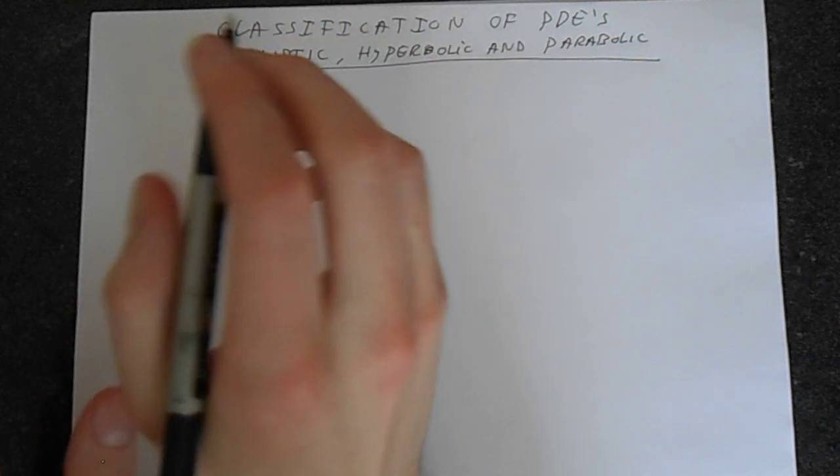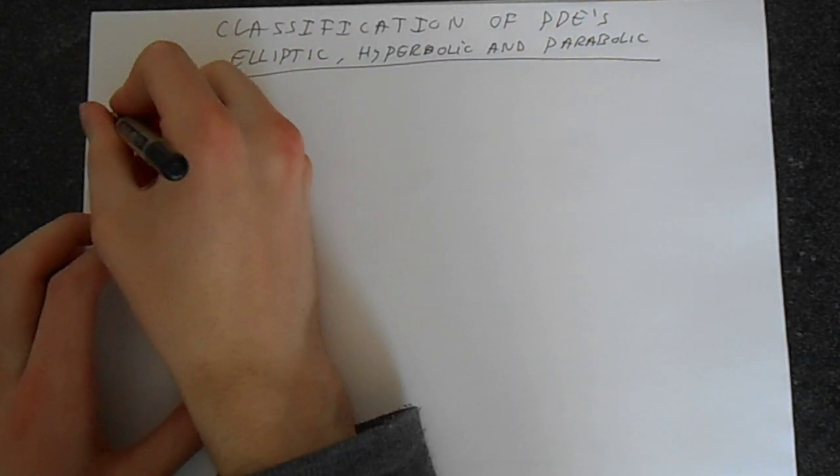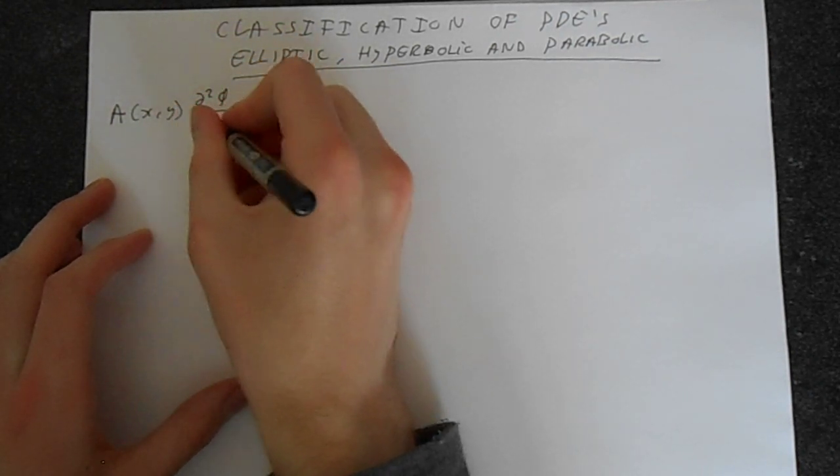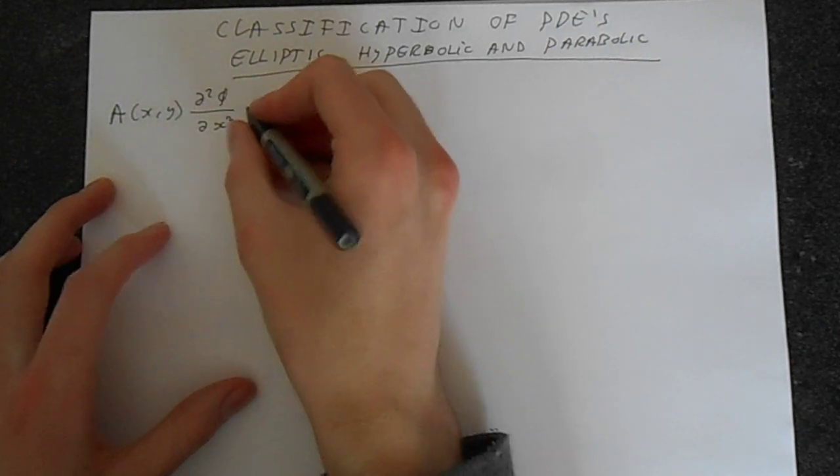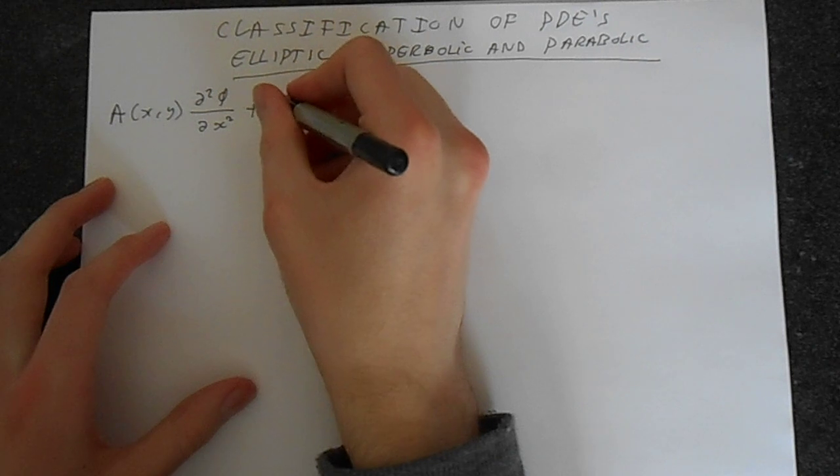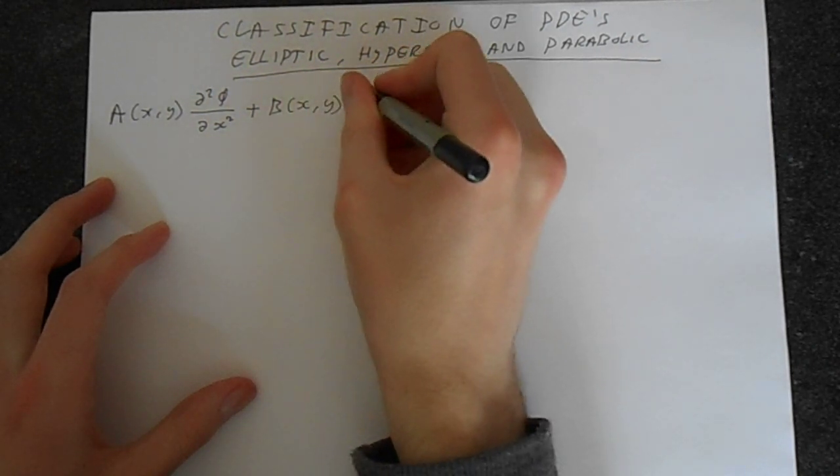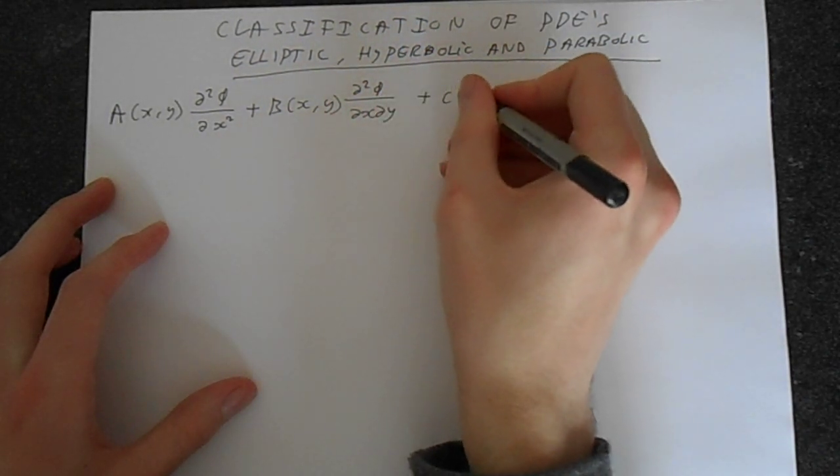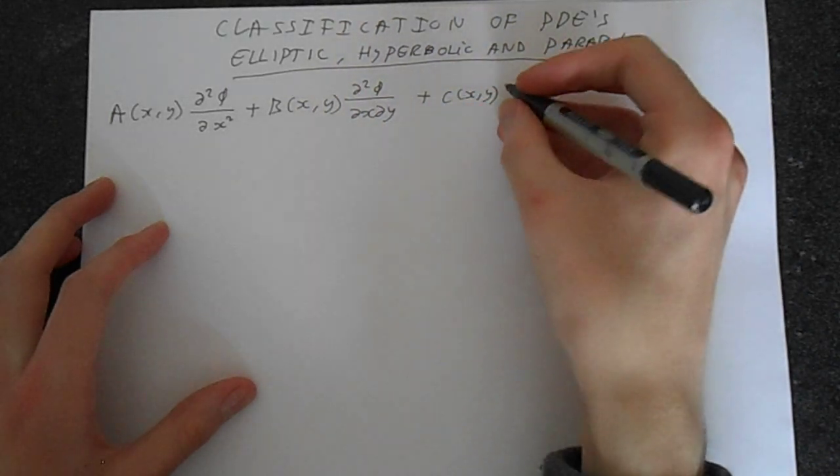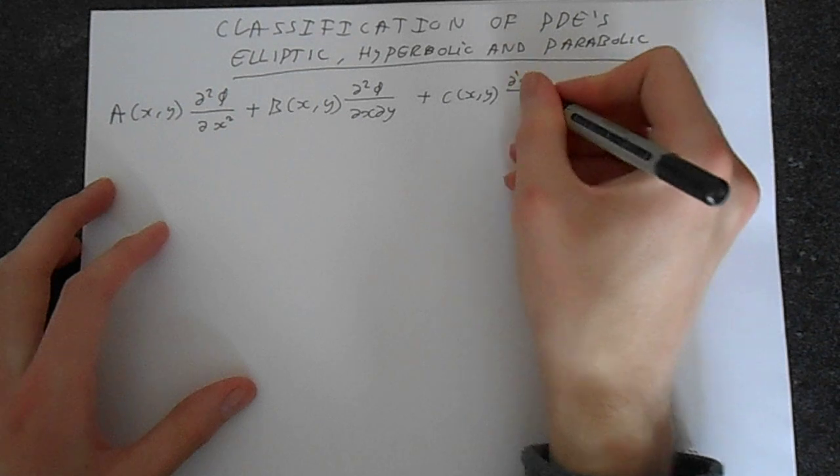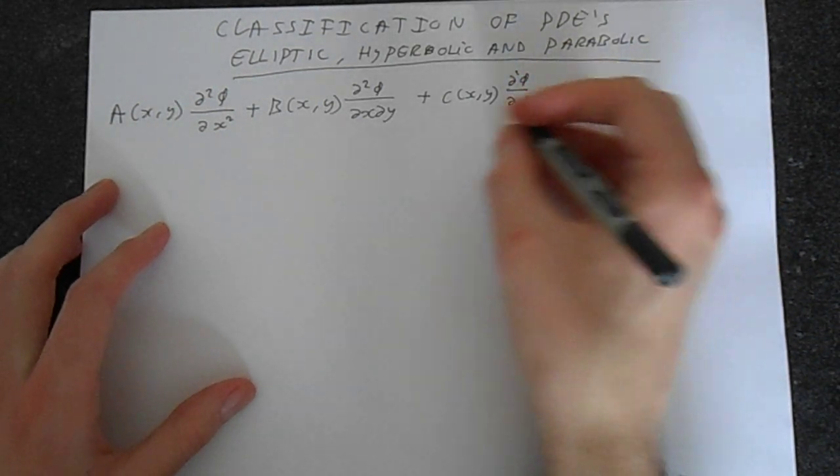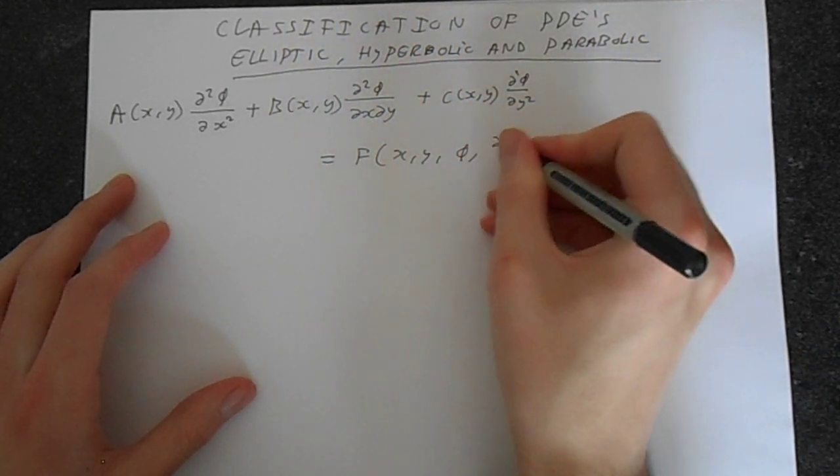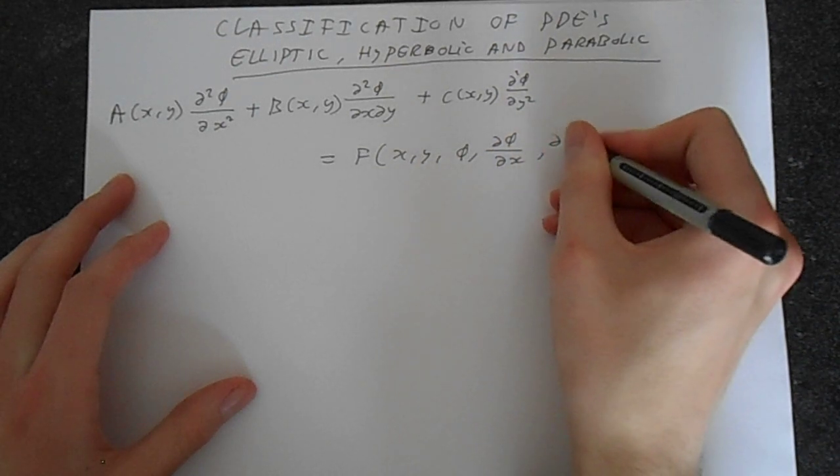So fundamentally we have a general equation that we can use here. We've got something a of xy times the second derivative of our function partial with respect to x squared plus some function b which is a coefficient associated with the mixed derivative. And then we've got the function c, well it can be a function or a constant, partial with respect to y. And this is equal to something we'll call f of x, y, phi and so on or other stuff.